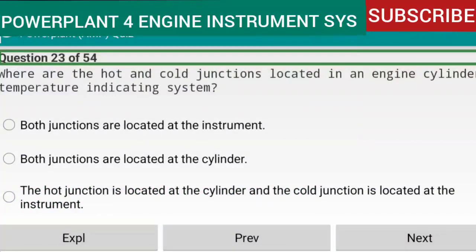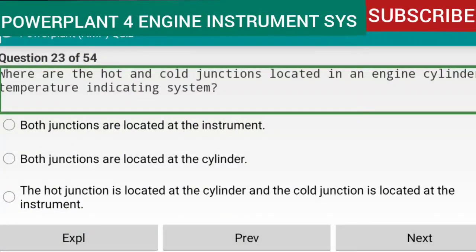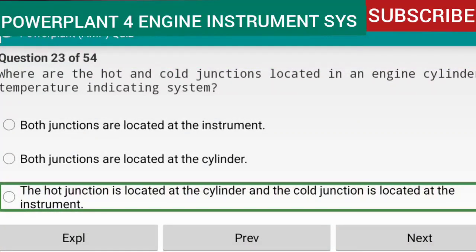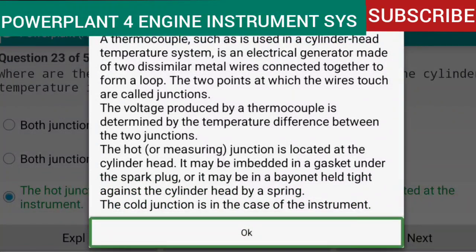Question 23 of 54: Where are the hot and cold junctions located in an engine cylinder temperature indicating system? The hot junction is at the cylinder and the cold junction is at the instrument. A thermocouple is an electrical generator made of two dissimilar metal wires forming a loop. The voltage produced is determined by the temperature difference between the two junctions. The hot or measuring junction is at the cylinder head — either embedded in a gasket under the spark plug or in a bayonet held against the head by a spring. The cold junction is inside the instrument case. Reference: AMTP Chapter 16.